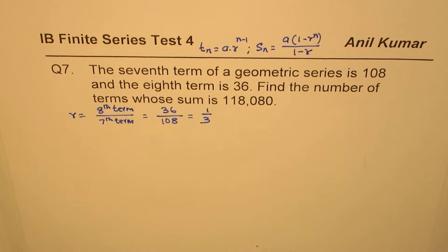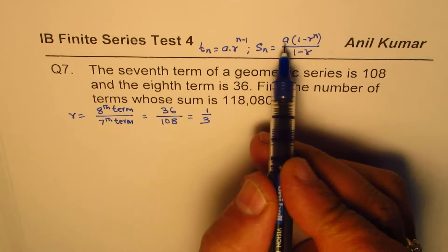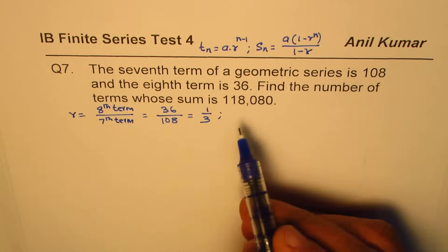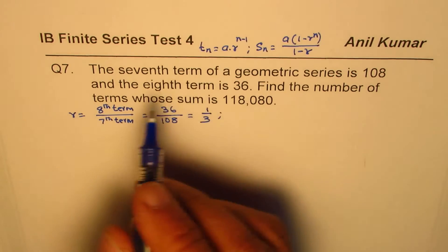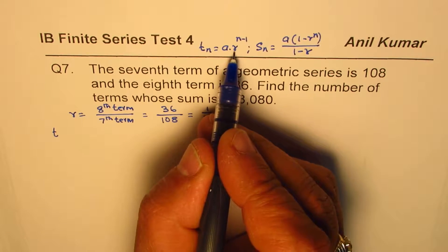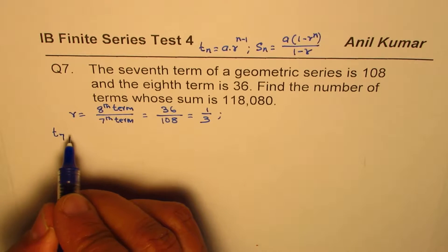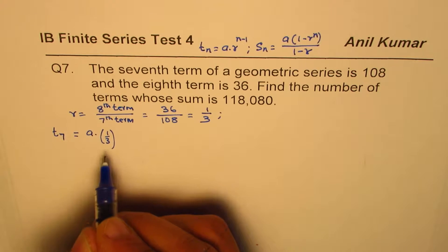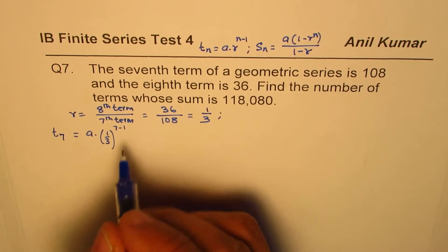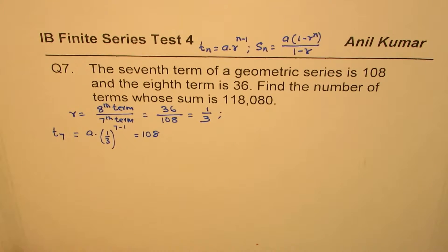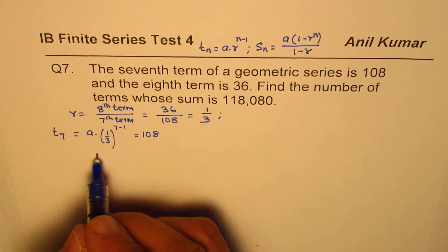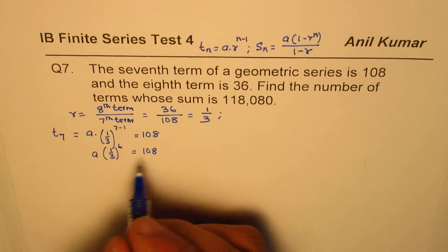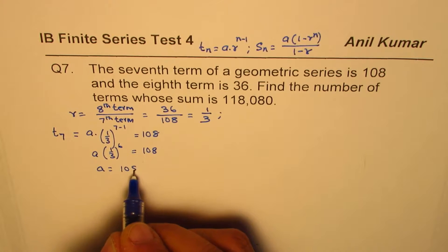Now to find the sum of terms we also need to know what a is. We can use the seventh term to find a. Using the formula t(n) equals a times r to the power of n minus 1, for the seventh term: t(7) equals a times (1/3) to the power of (7 minus 1), and the seventh term equals 108.